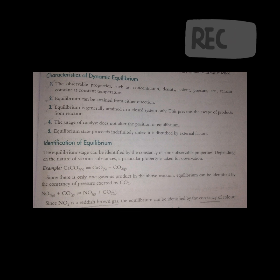Then we see the identification of equilibrium. The equilibrium stage can be identified by the constancy of some observable properties. Depending on the nature of various substances, a particular property is taken for observation. In the example CaCO3 → CaO + CO2...